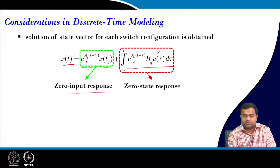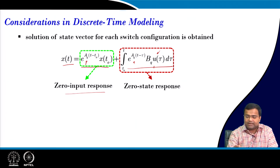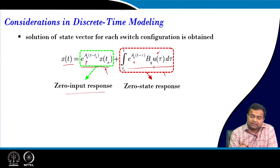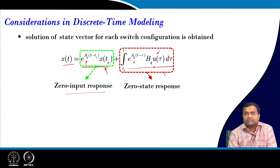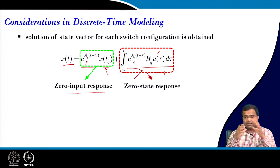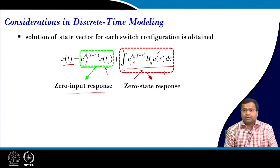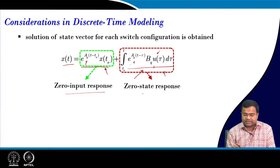Sometimes the first term is called the homogeneous solution and the second term the particular integral. The first is also known as the unforced response and the second as the forced response; the second can also be shown as a convolution of the input with the transition matrix. The bottom line is: zero input response and zero state response.